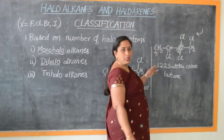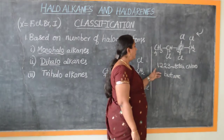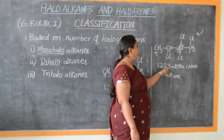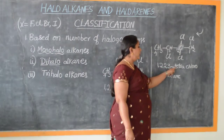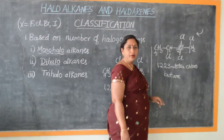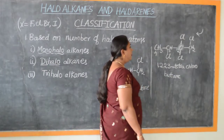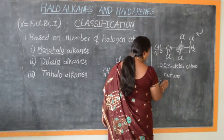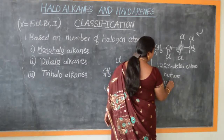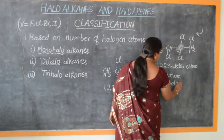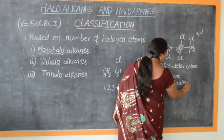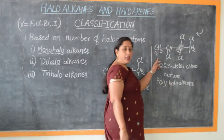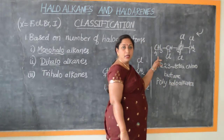So the IUPAC name of this particular compound is 1,2,2,3-tetrachlorobutane. This is an example of a polyhaloalkane, where more than three halogens are present in the same organic compound.